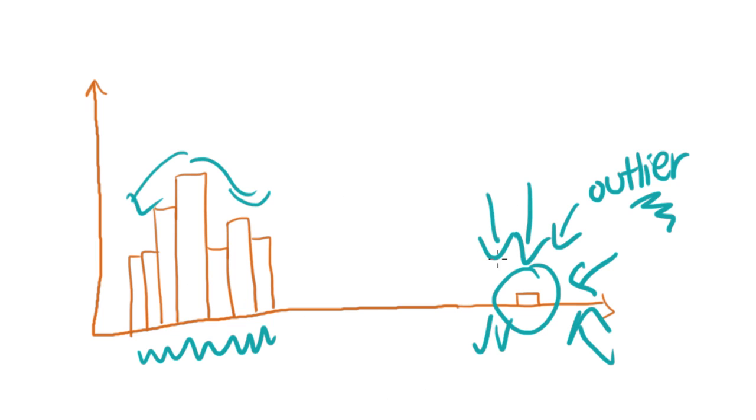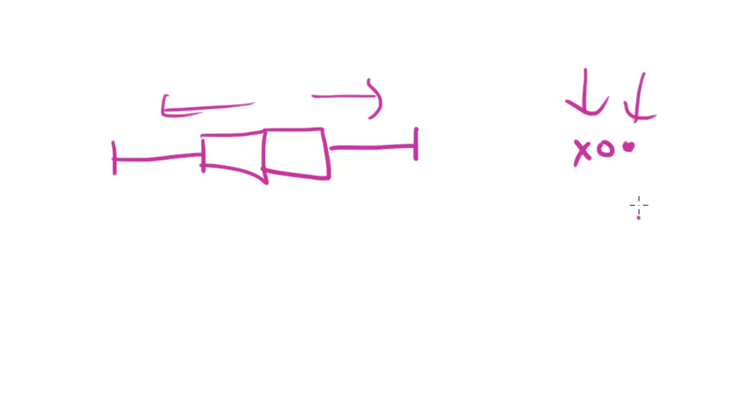So that's a distribution with outliers. That one was a histogram. What about a box plot with outliers? Do you remember what that looks like? Something like this. And then a little cross, or a dot, or a little circle, something like that. That's what an outlier looks on a box plot. And again, describing it, you'd say, well, hey, this bit's roughly symmetrical, but whoa, screaming outlier out here.